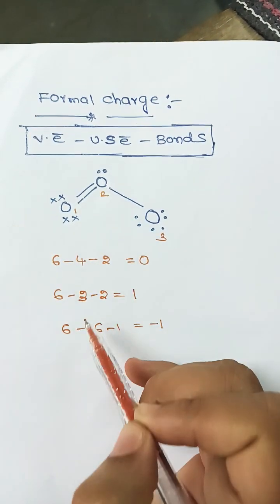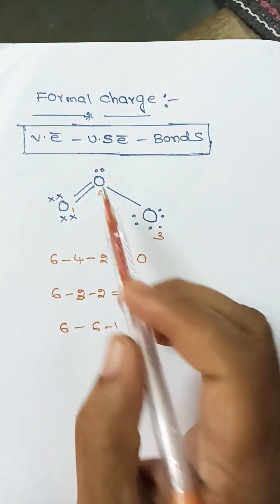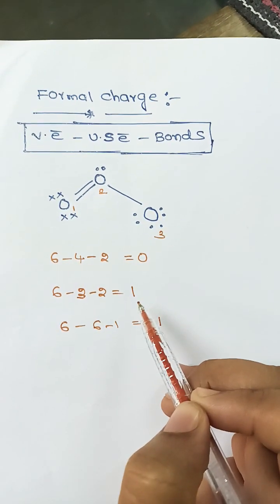For the second oxygen atom, valency electrons are 6, number of bonds are 3, and unshared electrons are 2. So that comes out to 1.